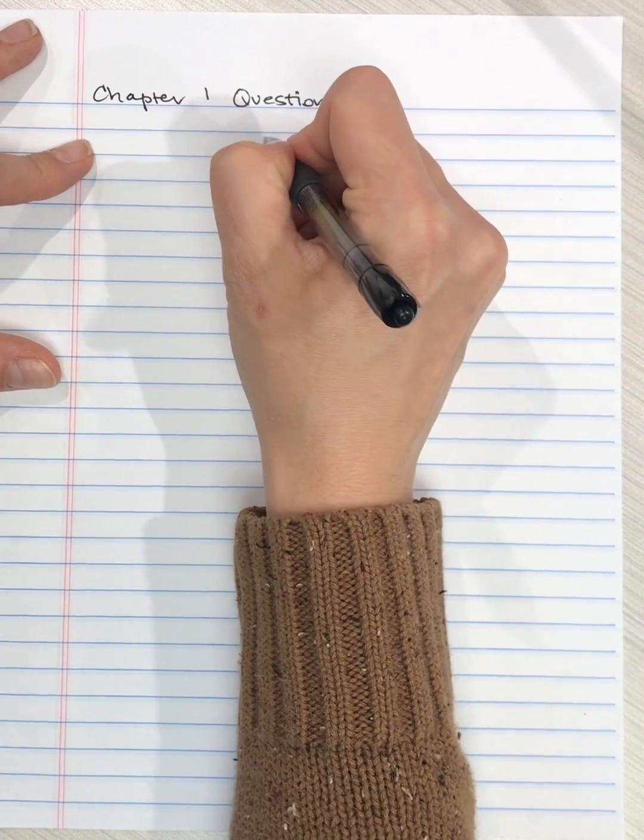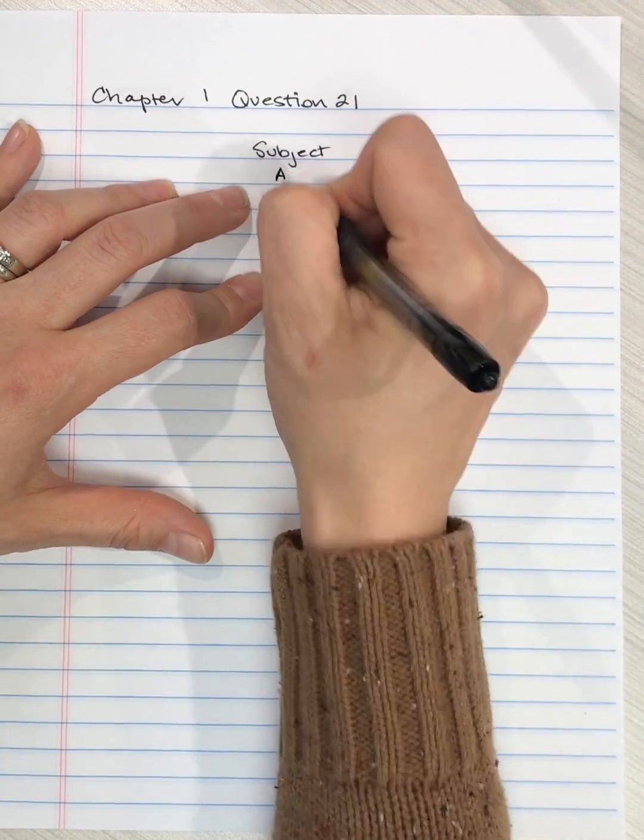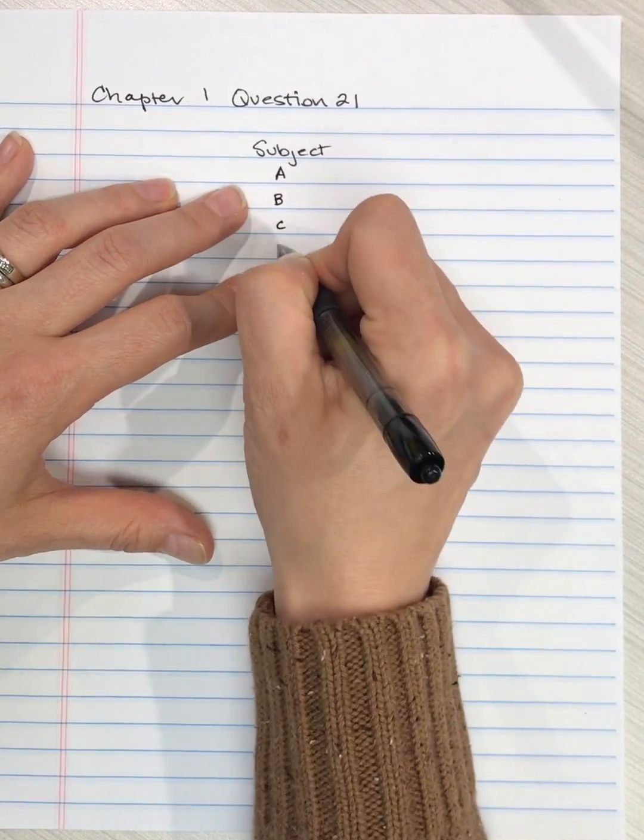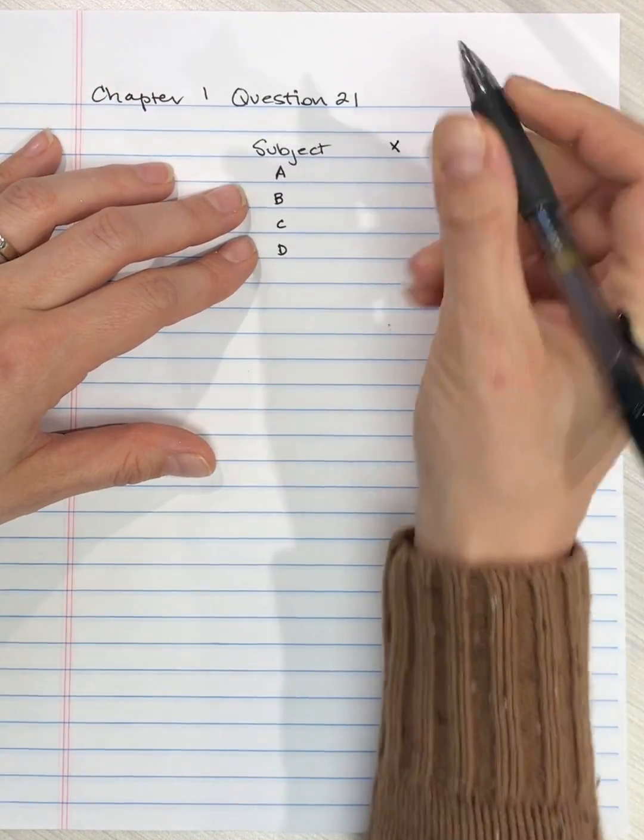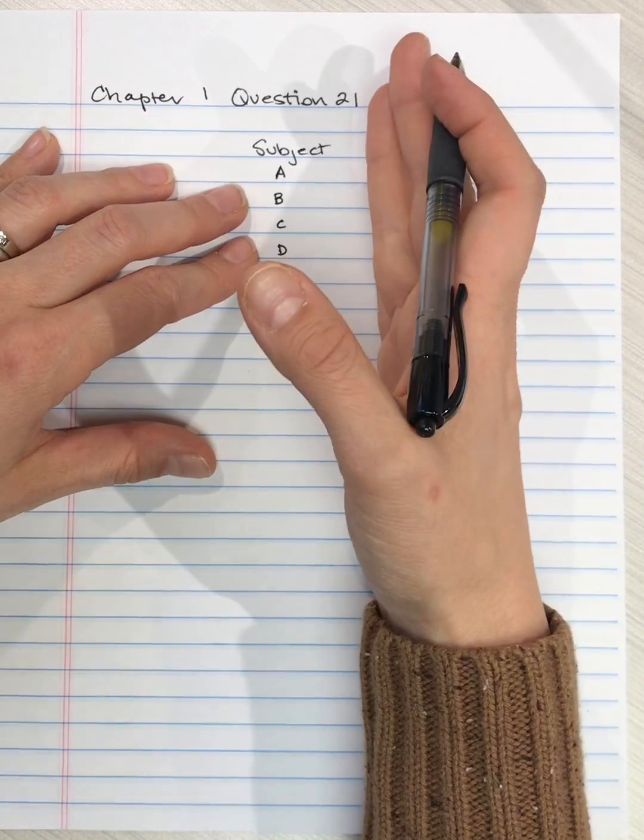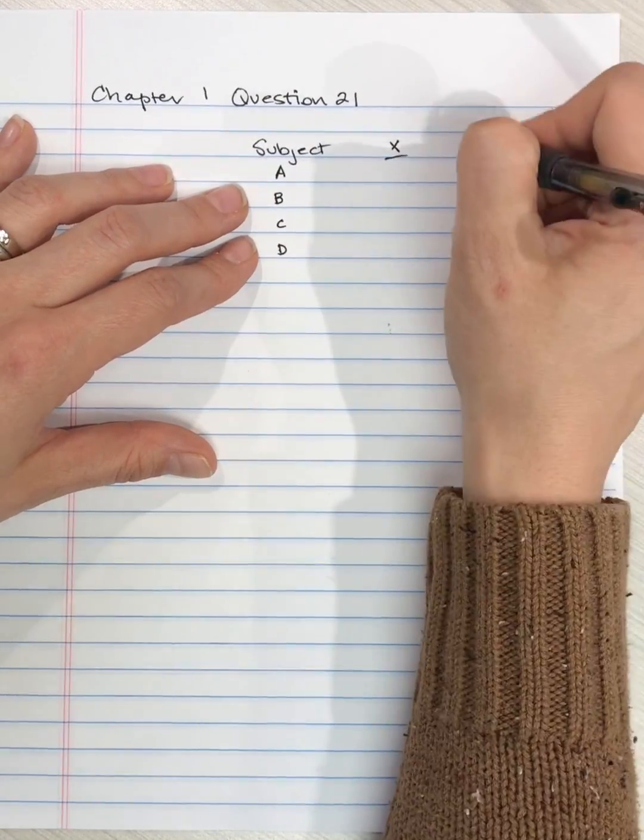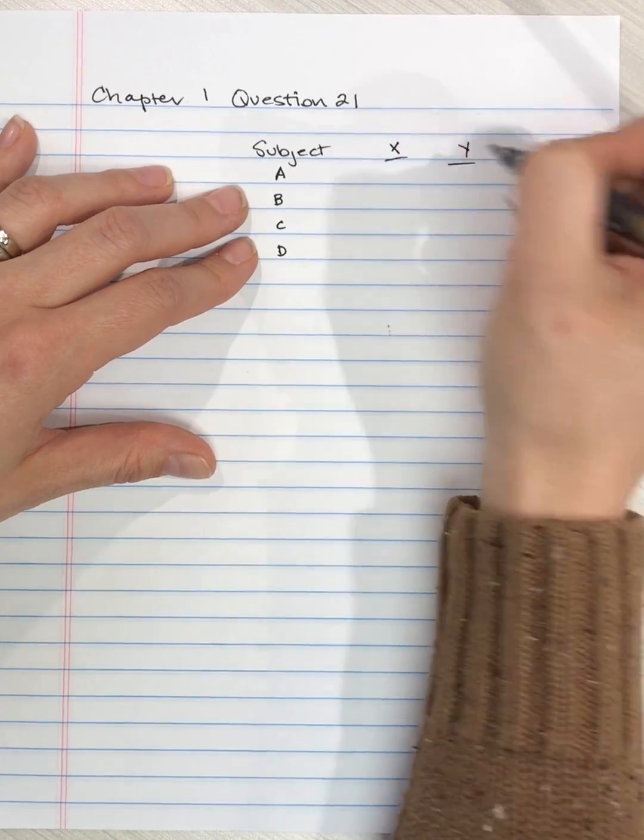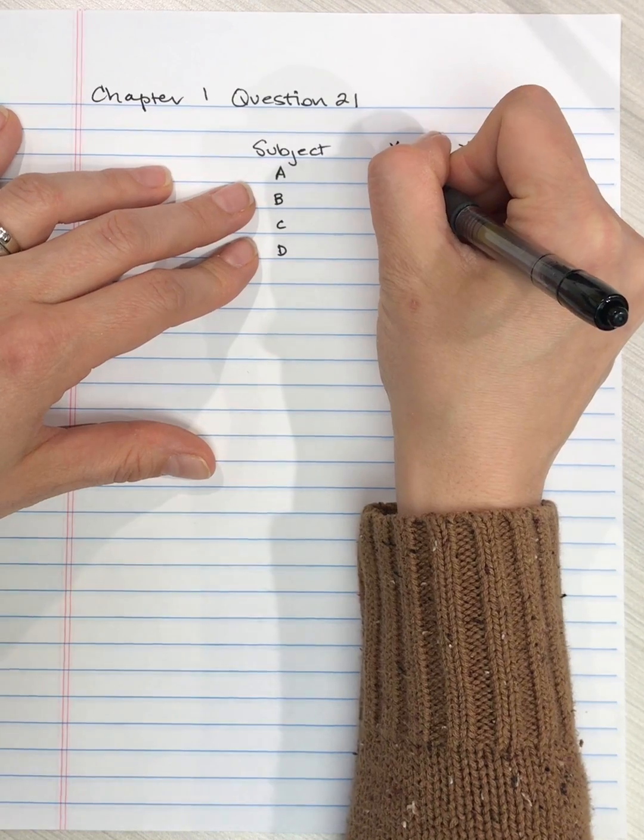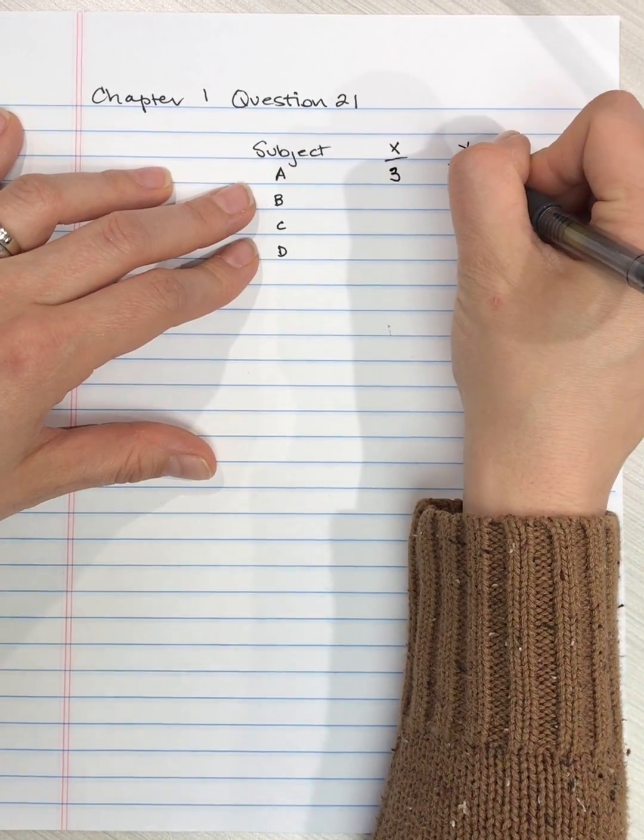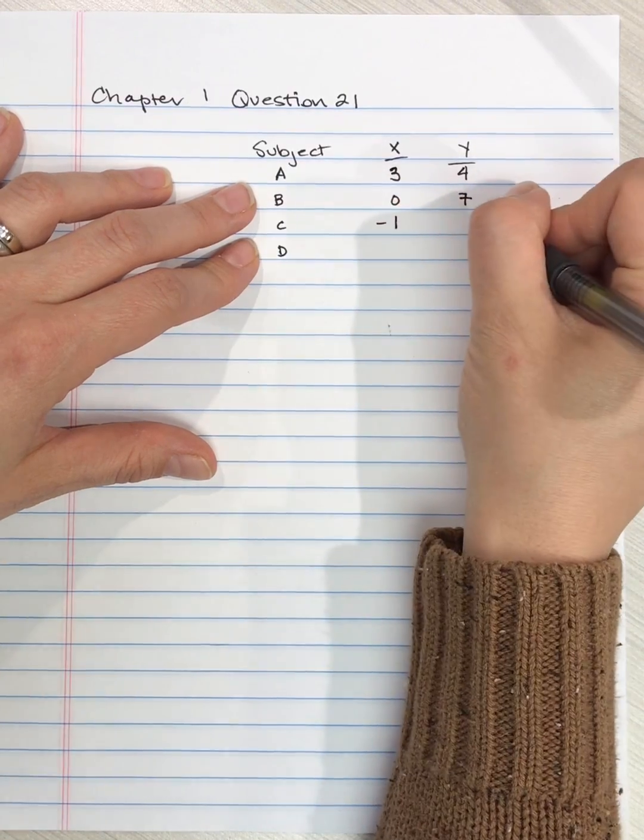So our data, what we have is four participants and they've given us two measurements. We've got a data point for the X score, X variable, and we've got a Y variable. So participant A on X has three and on Y has four. So I'm just copying these out from the textbook.